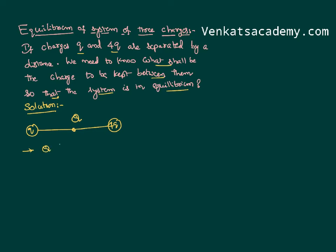For the entire system to be in equilibrium, first of all every charge has to be in equilibrium. Let capital Q be in equilibrium. Let Q be at a distance x from q, so the distance to 4q becomes automatically d minus x. On this positive charge, the other positive charge applies a repulsion, and 4q also applies a repulsion. So if Q has to be in equilibrium, it shall not experience a resultant force, meaning F1 must equal F2.